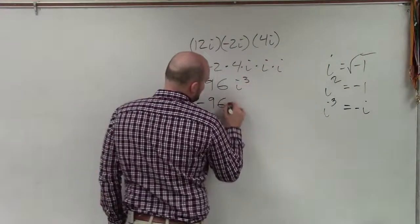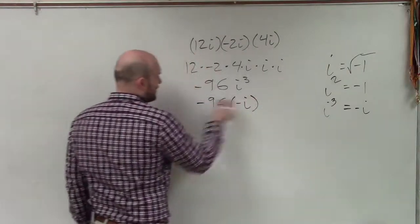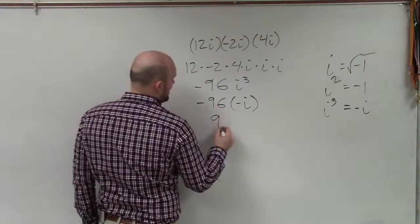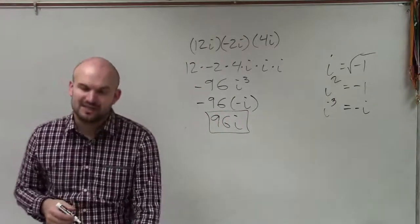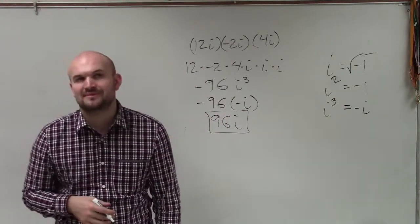I have negative 96 times negative i. Well, when I multiply negative times negative, I get a positive 96 times i, which will be my final answer, or simplified answer. Thanks.